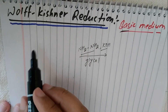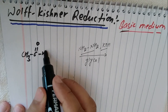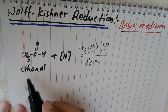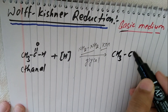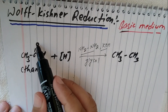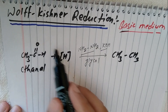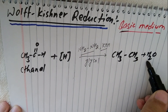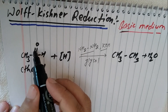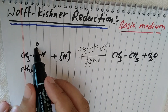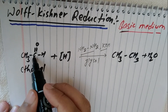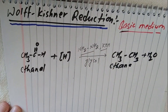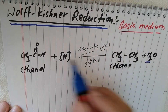Let us take the example of aldehyde: CH₃CHO (acetaldehyde or ethanal) when reduced gives alkane CH₃CH₃ (ethane). Here, the oxygen is removed — this oxygen bonds with hydrogen and forms water H₂O. After removing the oxygen, two bonds are freed and two hydrogens are added to that carbon, forming CH₂, and the total is CH₃CH₃. So ethane is formed.